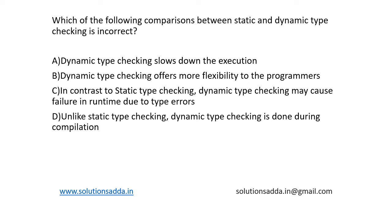This is a question from compiler design: which of the following comparisons between static and dynamic type checking is incorrect? First of all, what is static type checking? A language is said to be statically typed if the type of a variable is known at compile time. Some common examples include C, C++ etc., which are statically typed.